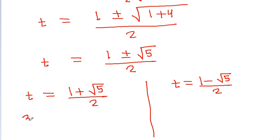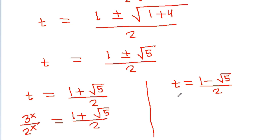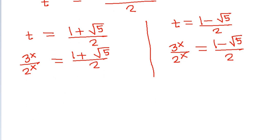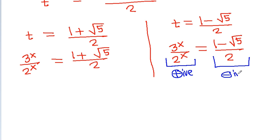And t is 3 to the power x divided by 2 to the power x, which equals (1 plus square root of 5) divided by 2. Here, since 3 to the power x divided by 2 to the power x will always be positive, and (1 minus square root of 5) divided by 2 is negative, that solution is not possible.